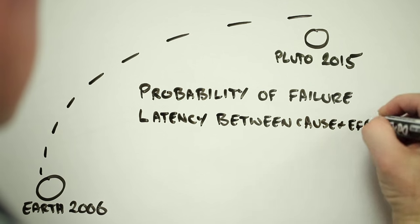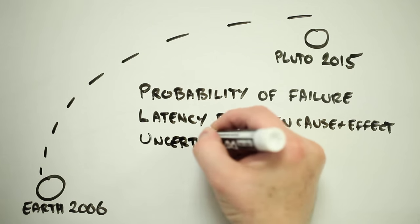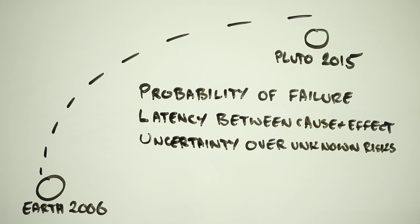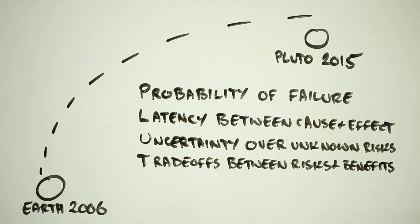There was latency, where early mission events could have jeopardized the Pluto flyby. There was uncertainty. New Horizons was boldly going where no spacecraft has been before. There were trade-offs, risks that had to be weighed against each other and against benefits to achieve the mission goals.